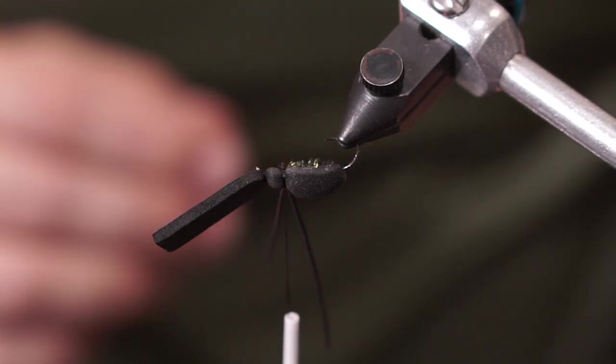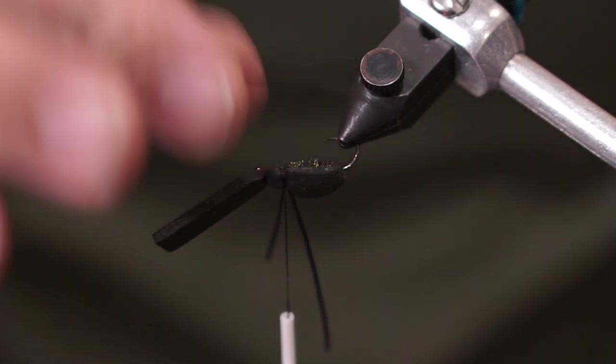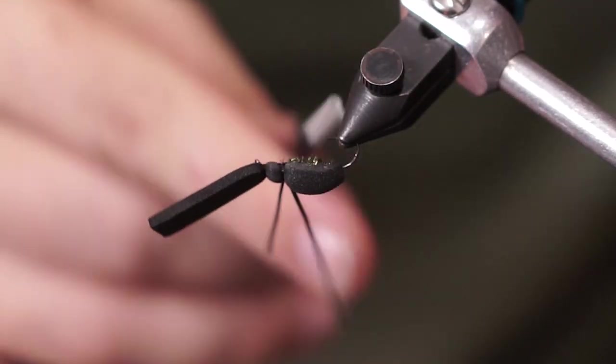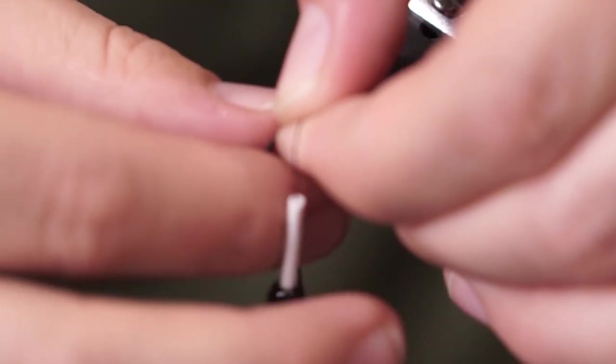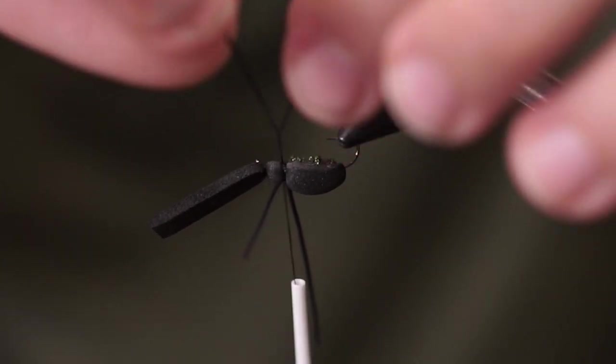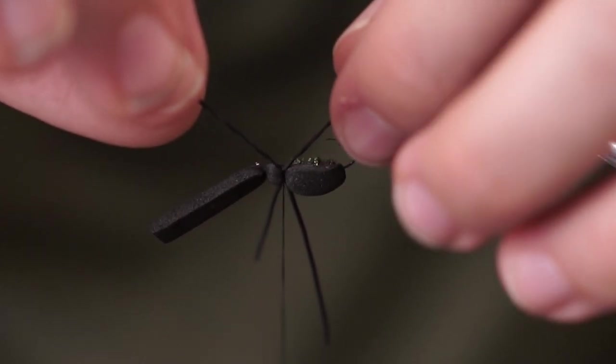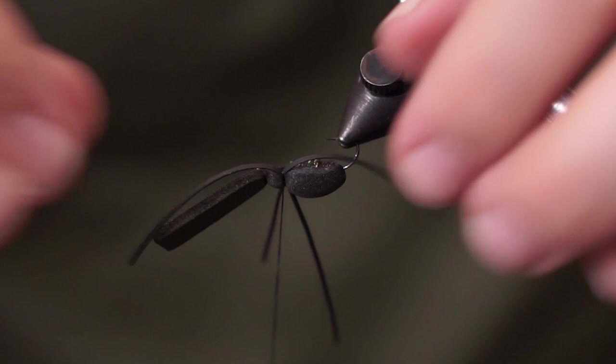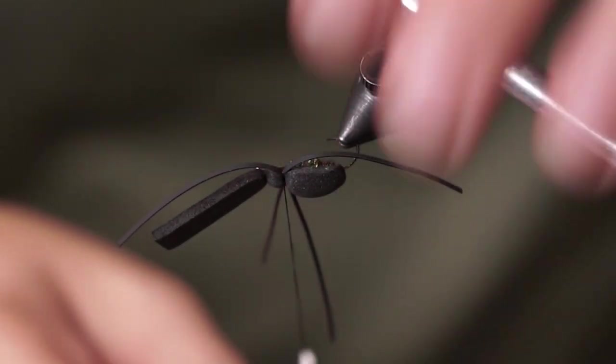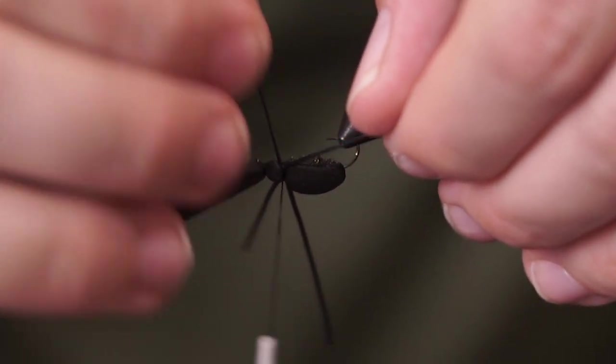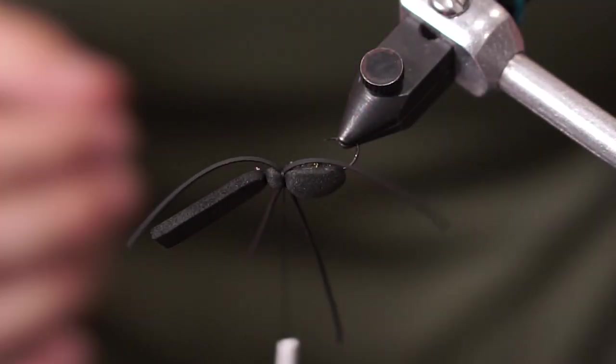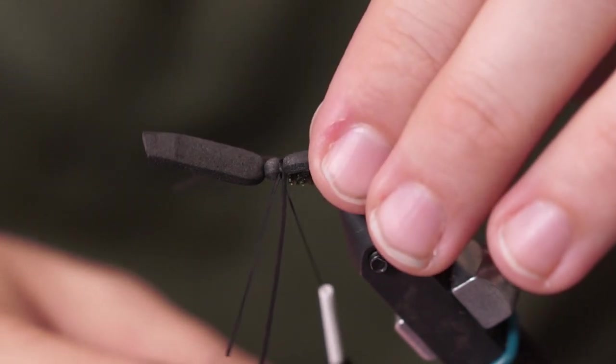So let me show you what that looks like on the other side of the fly. So I have my leg. I'm going to bring my thread up, and wrap my legs underneath. That allows me to place my legs into the position I want, right along the side of the body. Put a second wrap around, readjust as needed. Now those legs are locked into place.